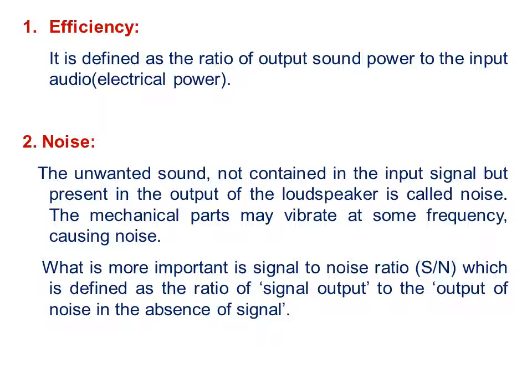The second characteristic is noise. Noise is a kind of disturbance — it is the unwanted sound which is not present in the input signal but gets present on the output side of the loudspeaker. Sometimes the mechanical parts also vibrate at any frequency which causes noise. The signal to noise ratio, S/N ratio, is defined as the signal output to the output of noise in the absence of signal.